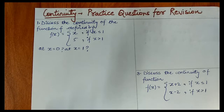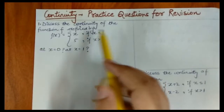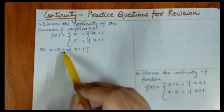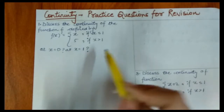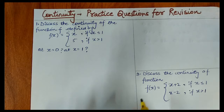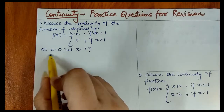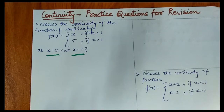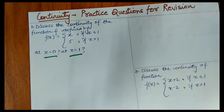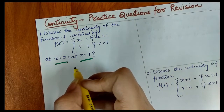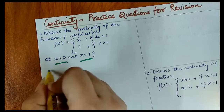The first question is to discuss the continuity of the function defined at x equal to 0 and x equal to 1. We have a function given and we have to check whether the function at x equal to 0 and at x equal to 1 is continuous or not. Let's start — first we have to check at x equal to 1.